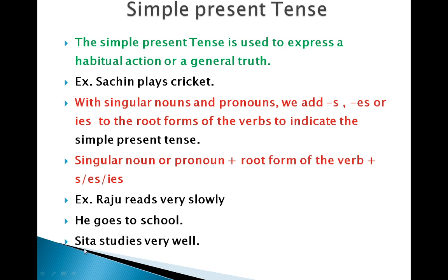Another example: 'Sita studies very well.' Here again a singular noun is present, so we add 'ies' to the root form of the verb. So one can easily identify simple present tense by looking at the form of the verb — if the verb has 's', 'es', or 'ies' joined to the root form, then it indicates simple present tense.